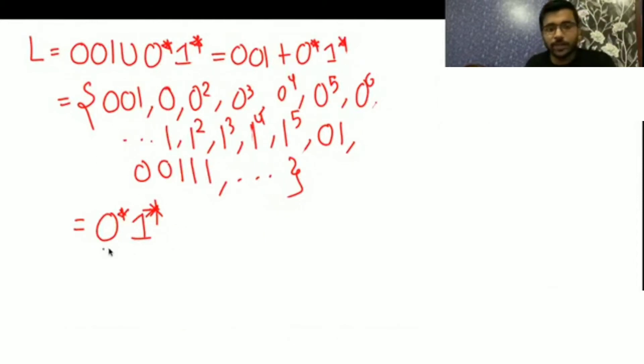So whatever minimal union—plus means union—it means you will include this also and all this also. In this, 0*1* is already here, so it is like the language. They have just written this to confuse people. So it is 001 union 0*1* only.